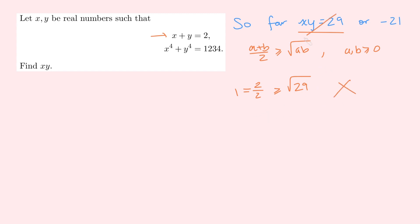And therefore, by contradiction, it can't be that xy equals 29. And so therefore, x times y equals minus 21. And that there is our answer.